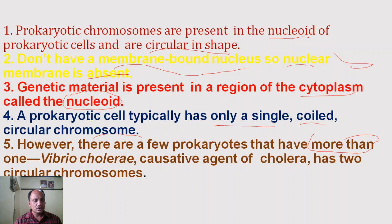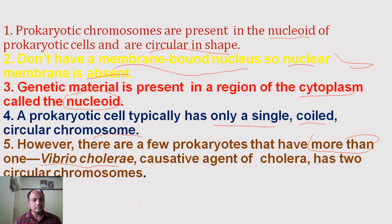An example is Vibrio cholerae, which is the causative agent of cholera. Vibrio cholerae has two circular chromosomes, whereas the remaining bacterial or prokaryotic cells generally have a single chromosome structure.